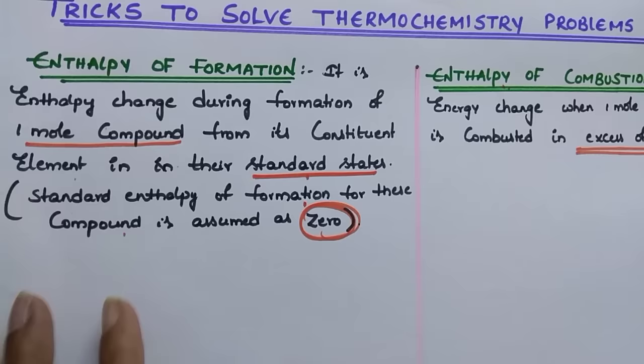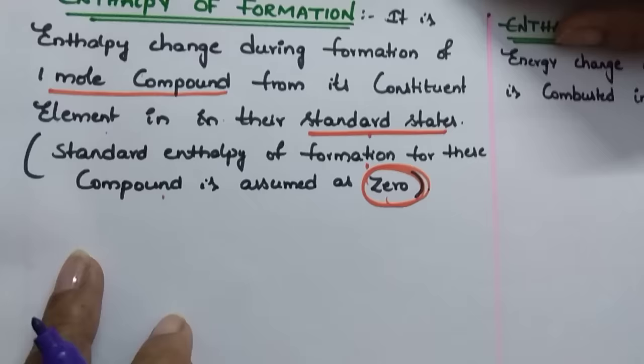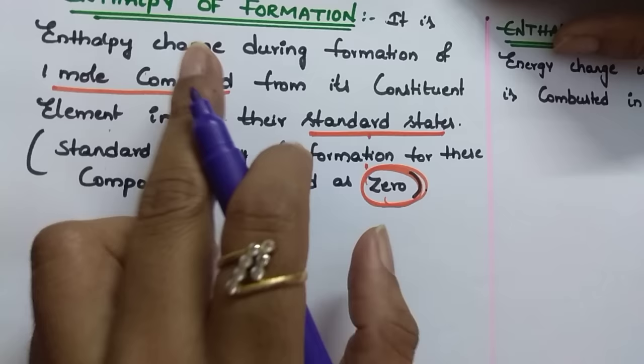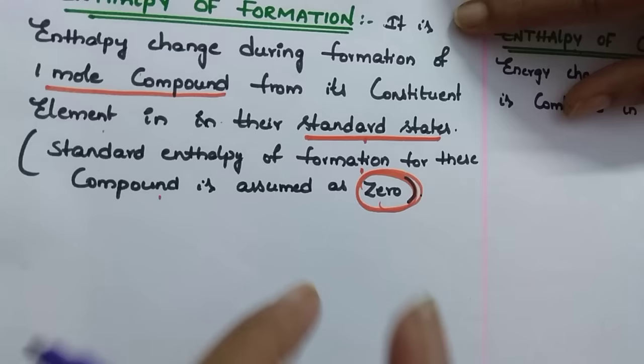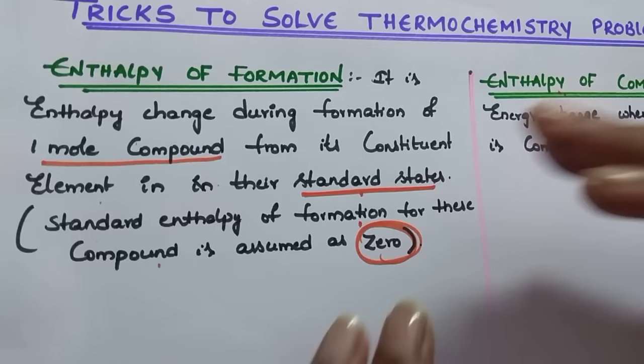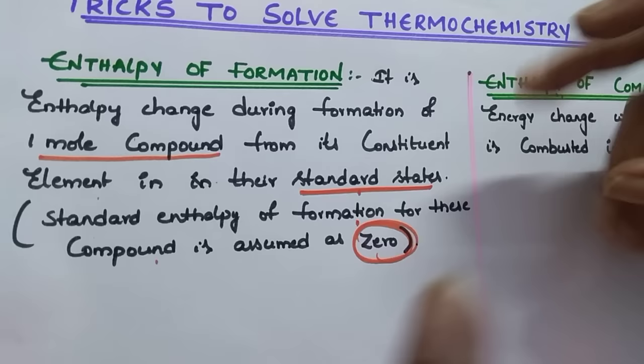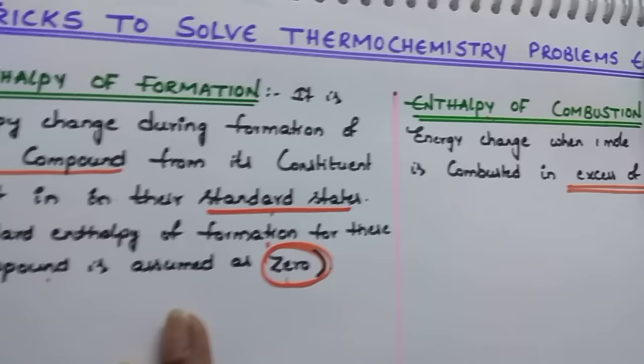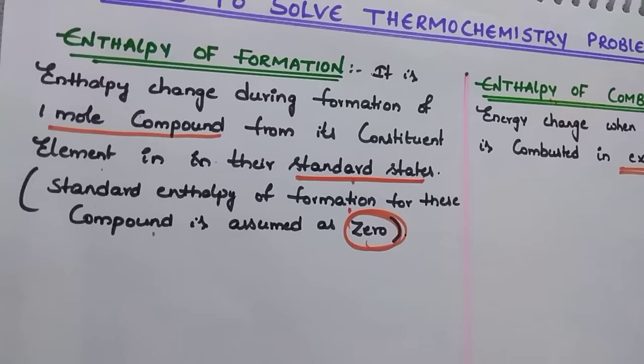How to write standard enthalpy of formation? What is the difference between enthalpy of formation and standard enthalpy of formation? Whenever the reaction takes place at standard conditions — one bar pressure, one molar concentration, and 25°C — we call it standard enthalpy of formation. Similarly, under the same conditions we call it standard enthalpy of combustion.